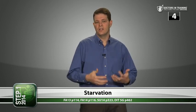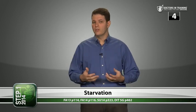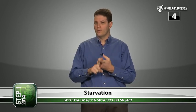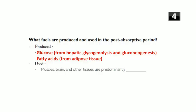In the fed state your adipocytes are happy, storing lots of energy. When you get to an energy-deficient state, those adipocytes have to give up that energy again. The fuel that's used in the post-absorptive period is predominantly glucose — the go-to fuel for muscles, brain, and other tissues. The liver is able to generate a lot of glucose, so even though some fatty acids are being made, it's predominantly glucose being used.